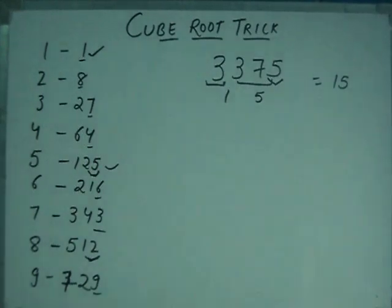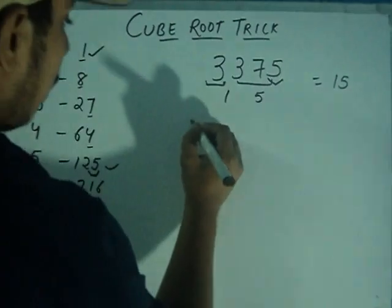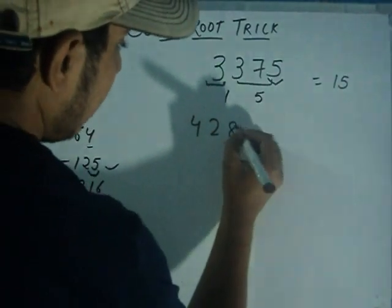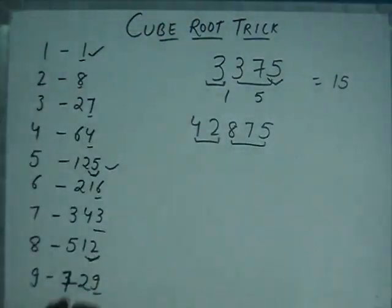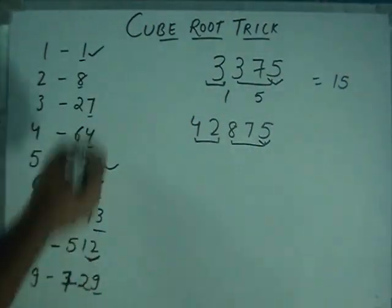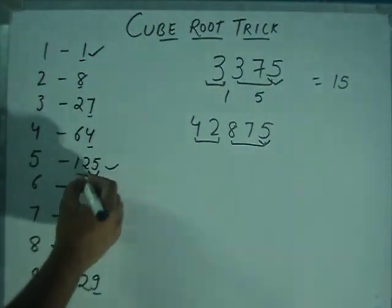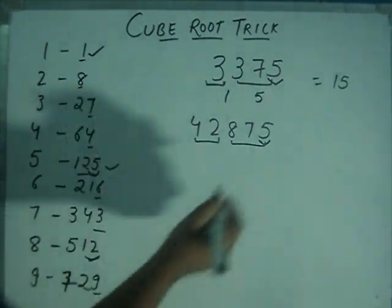Let's take another example. Suppose we have 42875. Divide it into two parts. Check this last digit. In this, we get 5 here as a unit digit.